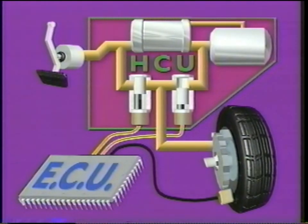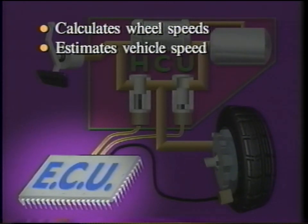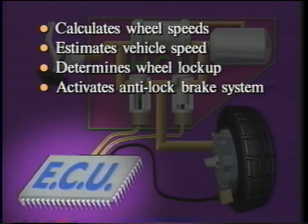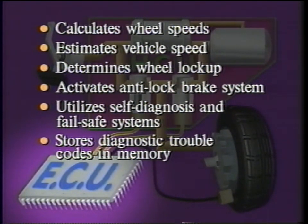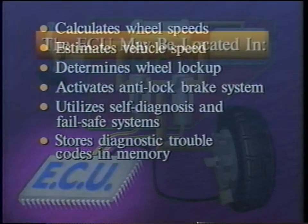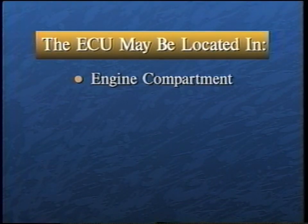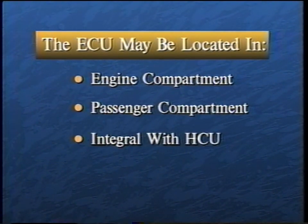Functions of the ECU include calculating wheel speeds, estimating vehicle speed, determining wheel lockup, activating the Anti-Lock Brake System, utilizing self-diagnosis and fail-safe systems, and storing diagnostic trouble codes in memory. The ECU can be located in the engine compartment, in the passenger compartment, or integral with the HCU.